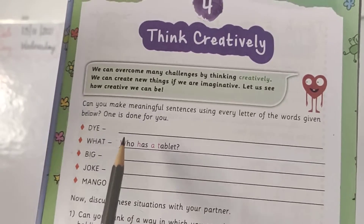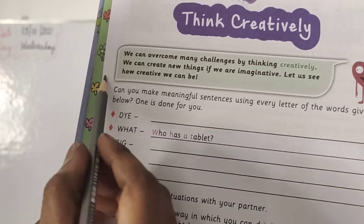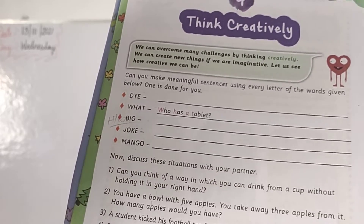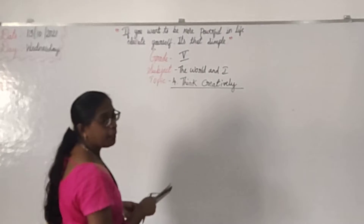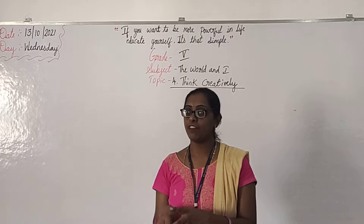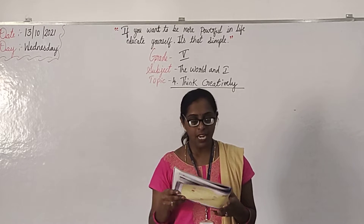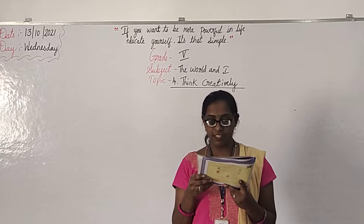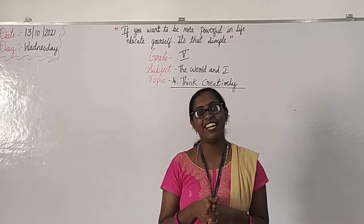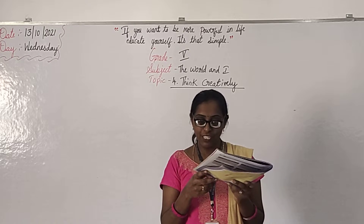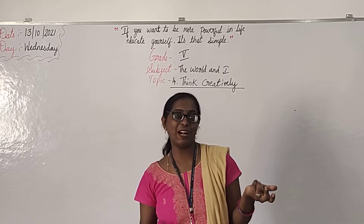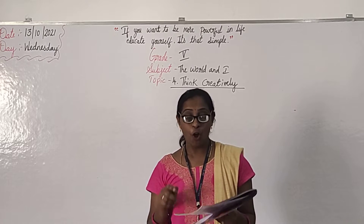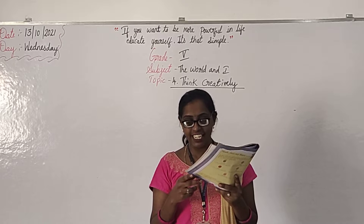This will be homework. I will see how creatively you will solve this challenge. Now you can mark it as homework. Then next, discuss this situation with your partner. You should discuss this with your partner — with him or with her. First one: Can you think of a way in which you can drink from a cup without holding it? You are right-handed. Without holding the cup, how do you drink? The answer is: hold the cup in your left hand. Very easy. They are telling not to hold it in the right hand, but they are not saying left hand. So you can use your left hand. That is the answer. It is written below in green color.